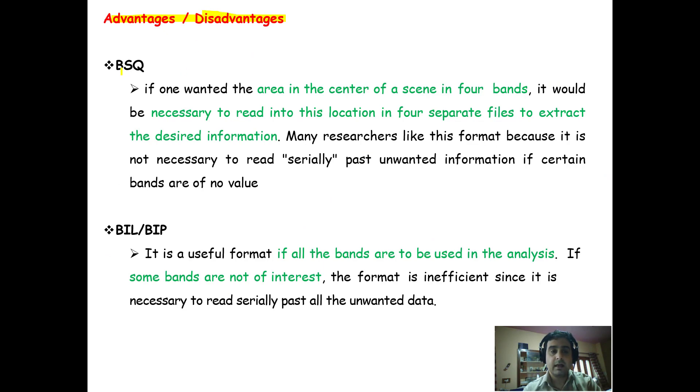Now, what are the advantages and disadvantages? For band sequential format, if we want an area in the center of the scene to be studied, we would need to extract the information of this area from four separate files to extract the desired information, because each band information is stored in a separate file. So we need to deal with four separate files to extract the information of this location for further study.